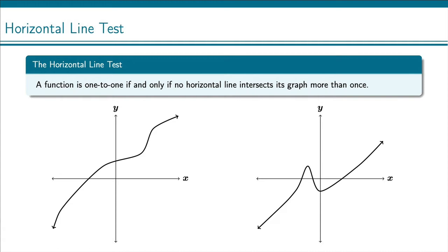The horizontal line test tells us that a function is one-to-one if and only if no horizontal line intersects the graph more than once.